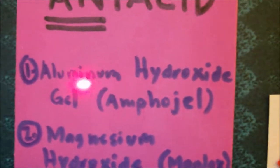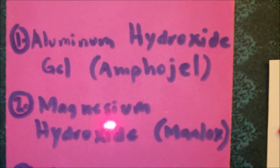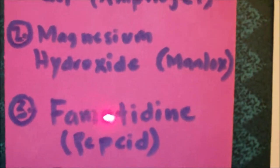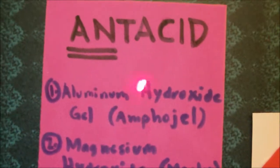The four major antacid drugs that we need to know for the NCLEX would include aluminum hydroxide gel, which is Amphagel, magnesium hydroxide, which is Maalox, famotidine, which is Pepcid, and ranitidine, which is Zantac.